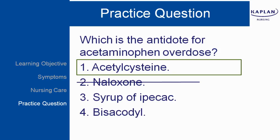Naloxone is used for opiate overdose. Syrup of Ipecac in the past was used to induce vomiting, but is not often used anymore. And Bisacodyl is used for constipation.